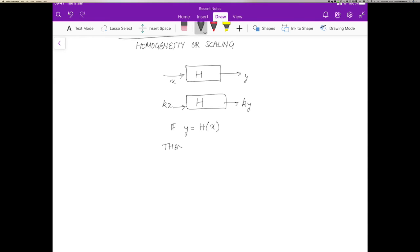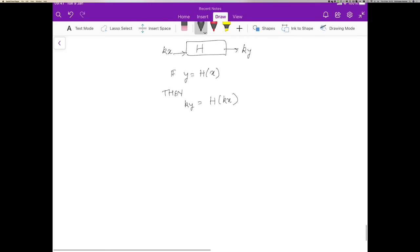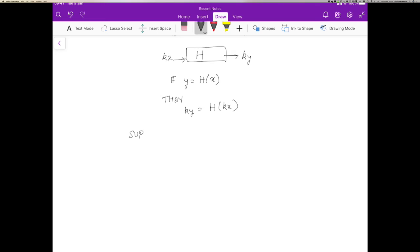Now we can combine the two of additivity and homogeneity, and we get what's called the principle of superposition. And superposition essentially says that if y1 is H of x1, y2 is H of x2, and for scalars k1 and k2, then k1*y1 plus k2*y2 equals H of k1*x1 plus k2*x2. And so this property of superposition is in fact required for a linear system.